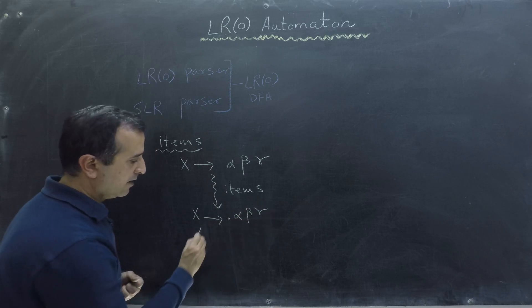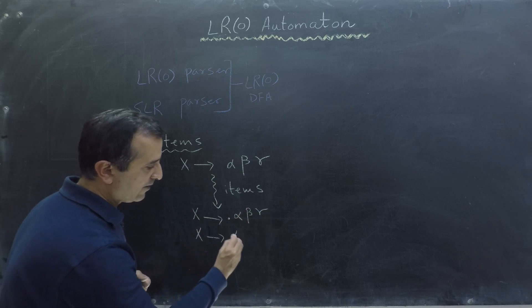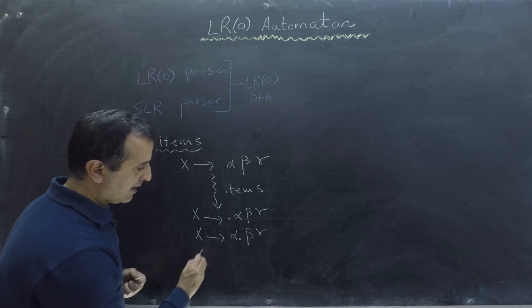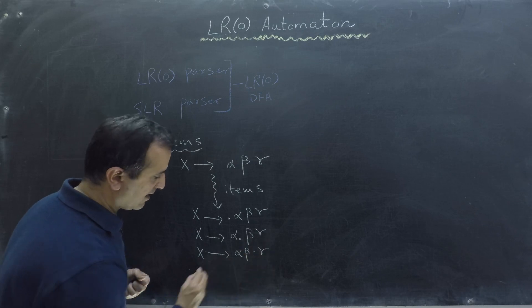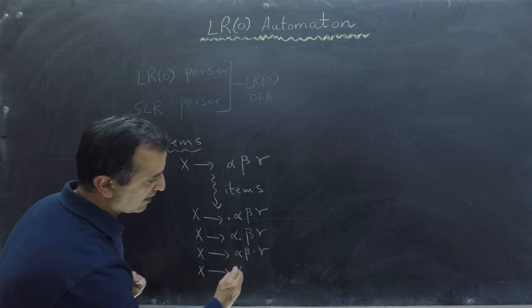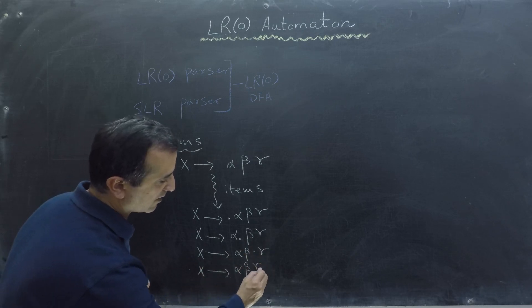So our items for this production are x goes to dot alpha, beta, gamma. And x goes to alpha, dot, beta, gamma. And x goes to alpha, beta, dot, gamma. And finally, x goes to alpha, beta, gamma dot.